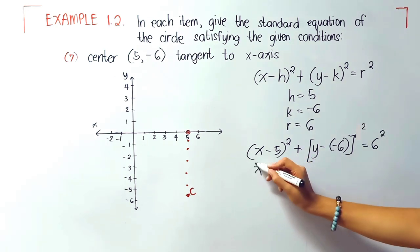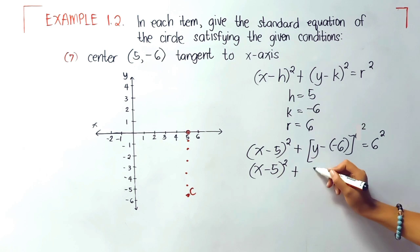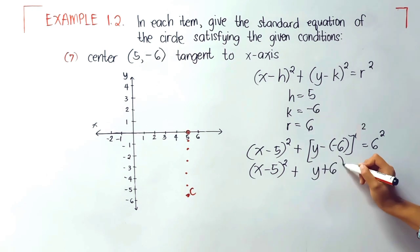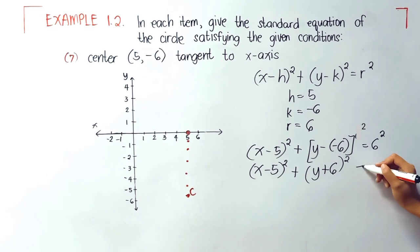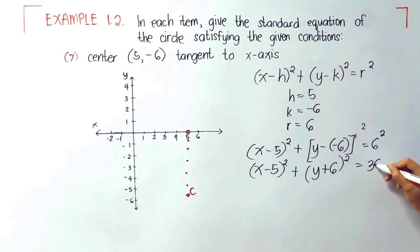We'll rewrite this one. Again, negative times negative is positive, and 6 squared equals 36. And this is our final answer.